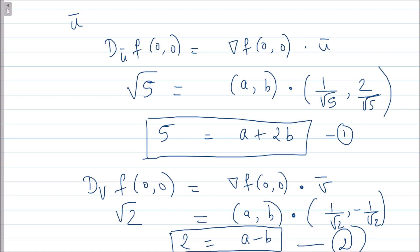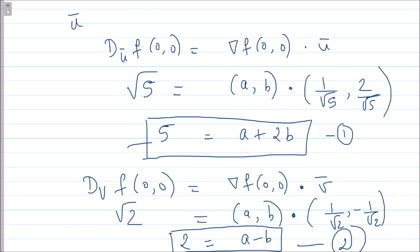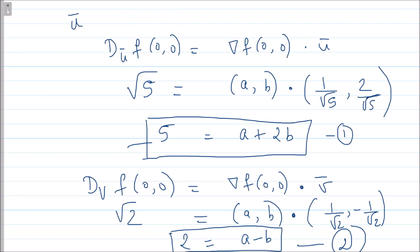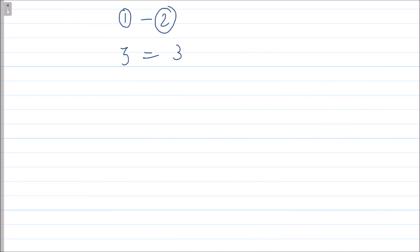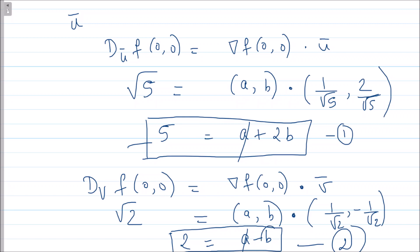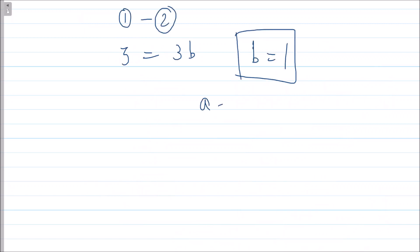Now if I do 1 minus 2, 5 minus 2 is 3. So 3 equals - a minus a goes away, 2b plus b will be 3b, so my b comes out to be 1. And from the second equation, as soon as my b is 1, my a comes out to be 3. Therefore a + b, the answer is 4.